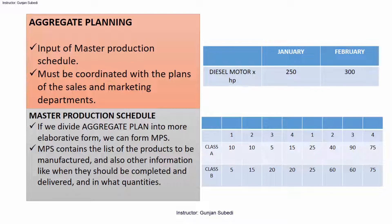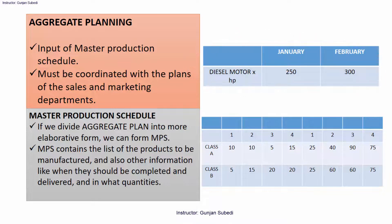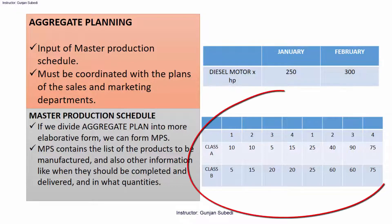Suppose we have a project for manufacture of diesel motor engines of a particular capacity for the months of January and February. We have an overall helicopter-view plan in the aggregate planning. Keep in mind the aggregate plan must be coordinated with the plans of the sales and marketing departments. This is called aggregate planning.